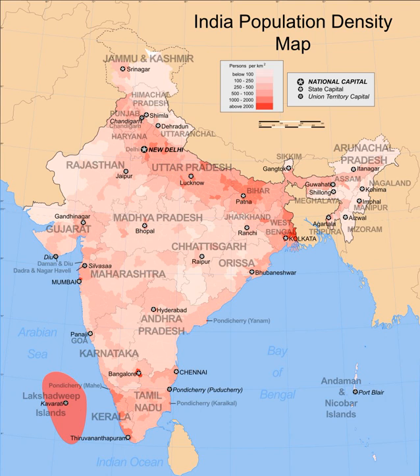India is the second most populated country in the world with nearly a fifth of the world's population. According to the 2017 revision of the world population prospects, the population stood at 1,324,171,354. During 1975–2010 the population doubled to 1.2 billion. The Indian population reached the billion mark in 1998.